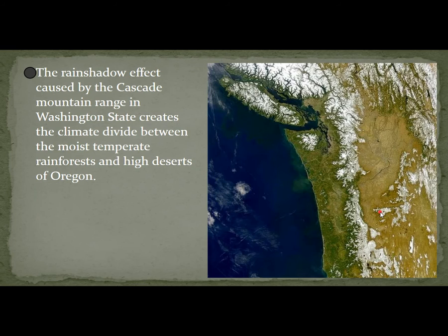The rain shadow effect caused by the Cascade Mountain Range in Washington state creates the climate divide between the moist temperate rainforests and the high deserts of Oregon.